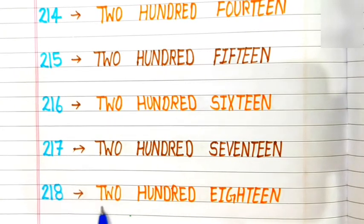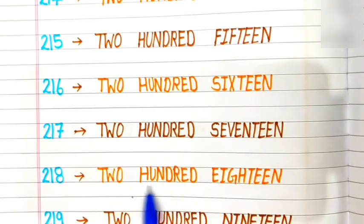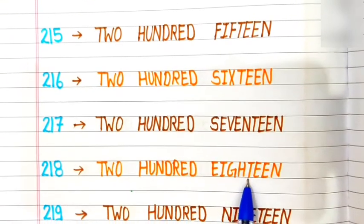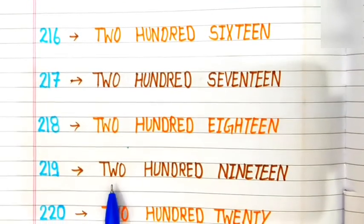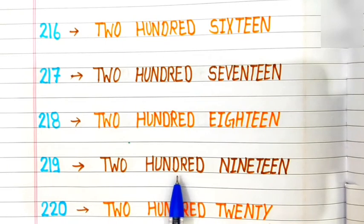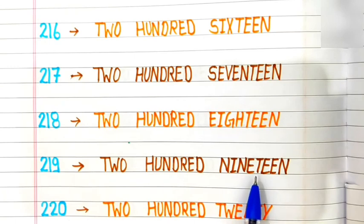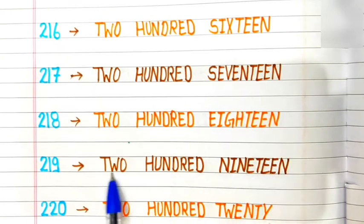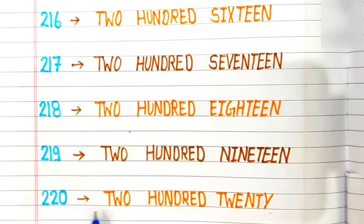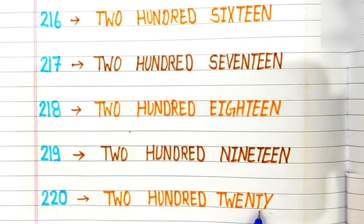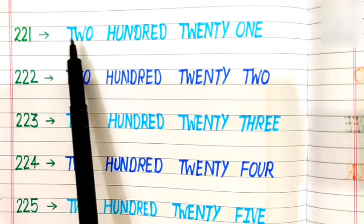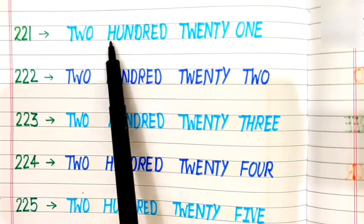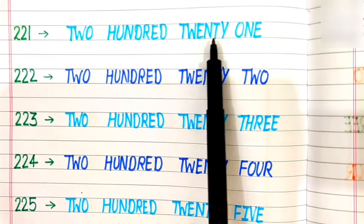218: T-W-O H-U-N-D-R-E-D E-I-G-H-T-E-E-N. 218. 219: T-W-O H-U-N-D-R-E-D N-I-N-E-T-E-E-N. 219. 220: T-W-O H-U-N-D-R-E-D T-W-E-N-T-Y. 220. 221: T-W-O H-U-N-D-R-E-D T-W-E-N-T-Y O-N-E. 221.